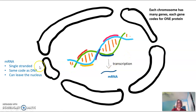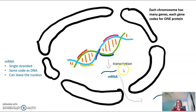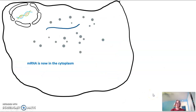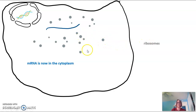mRNA is a single-stranded nucleic acid with the same code as the DNA — truly just a copy, like a photocopy of the gene. mRNA can leave the nucleus through the nuclear pore. Now out in the cytoplasm, the mRNA carries the code for how to make that protein to the location where the machinery is. Also out in the cytoplasm are organelles called ribosomes.